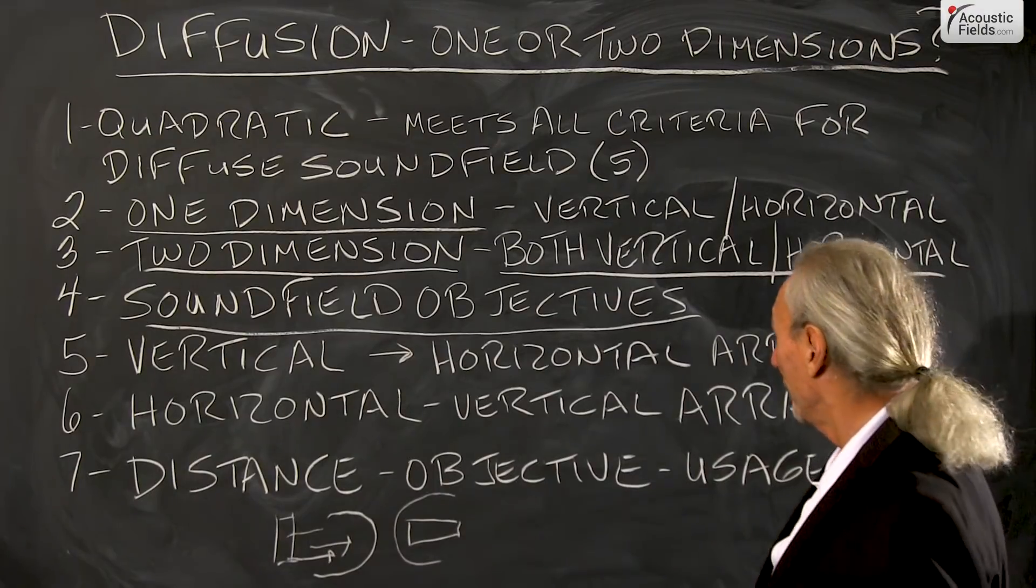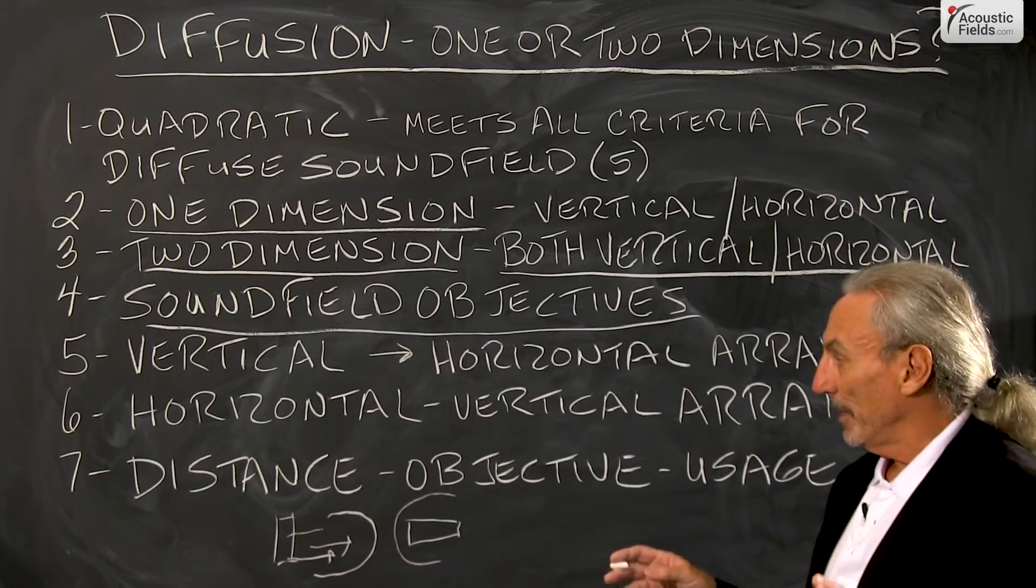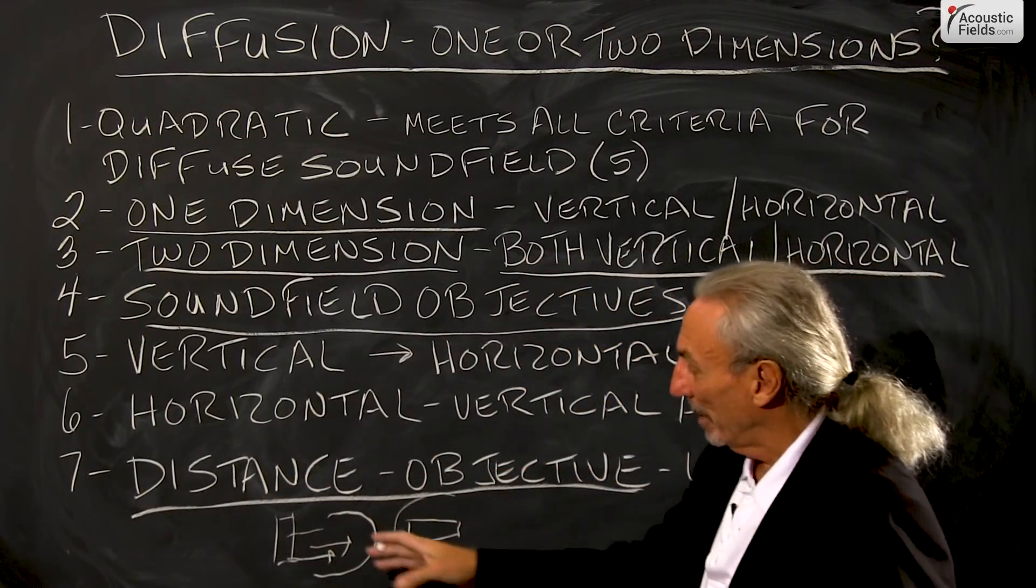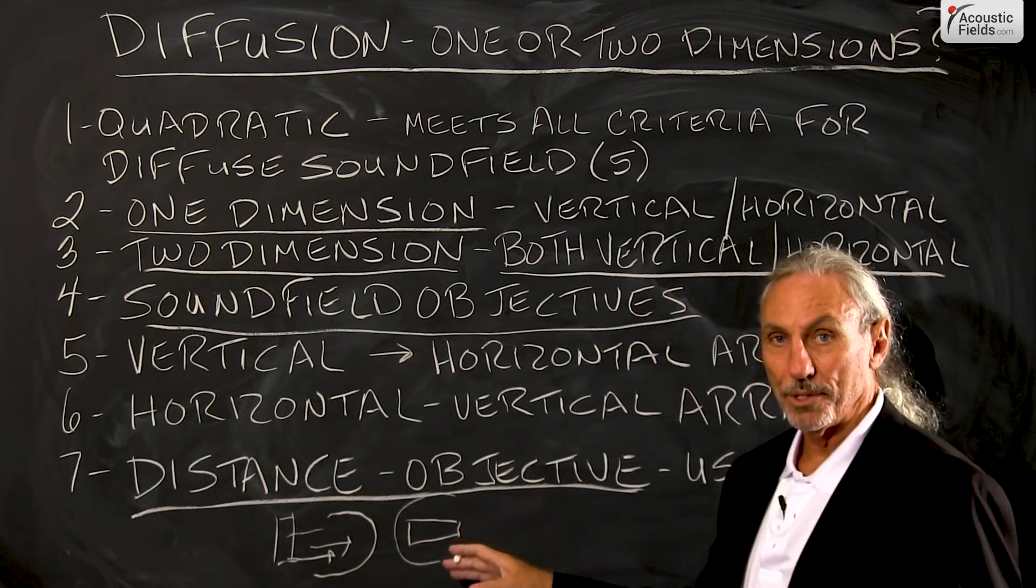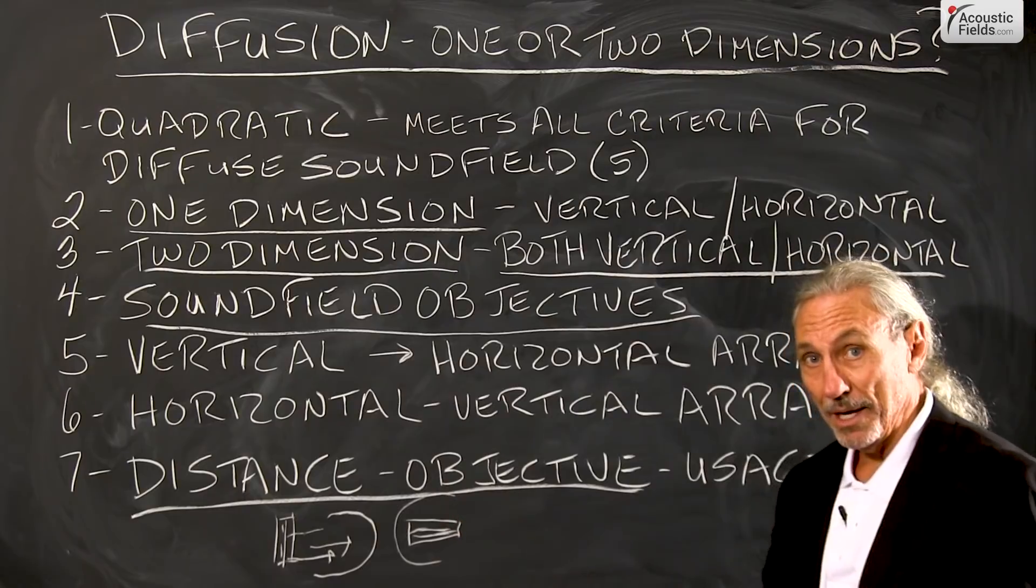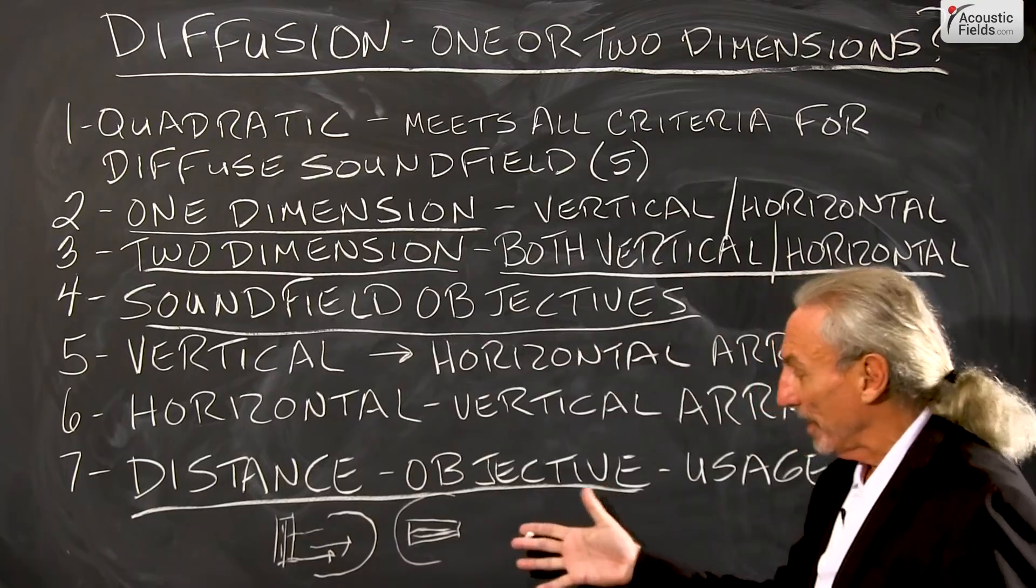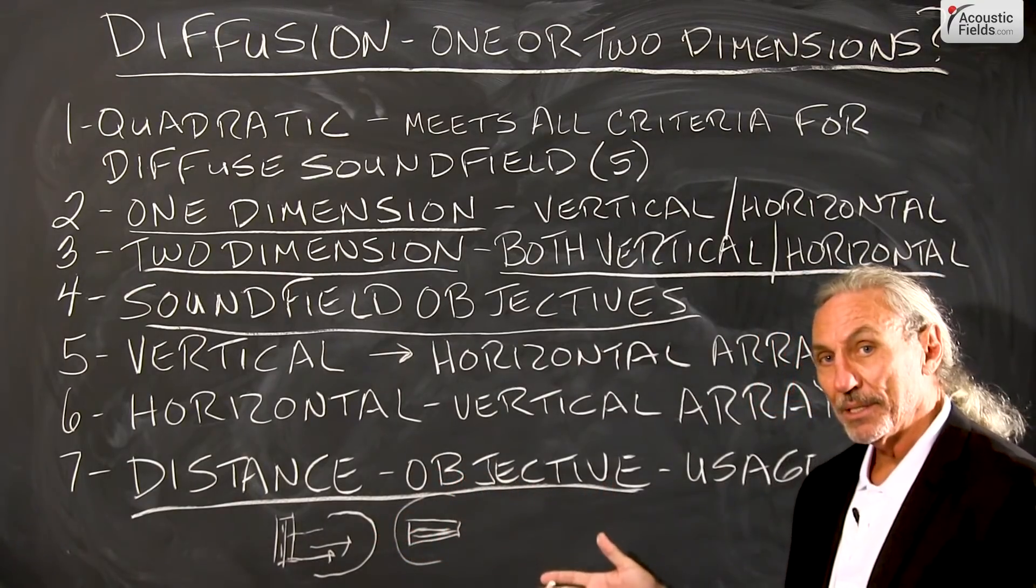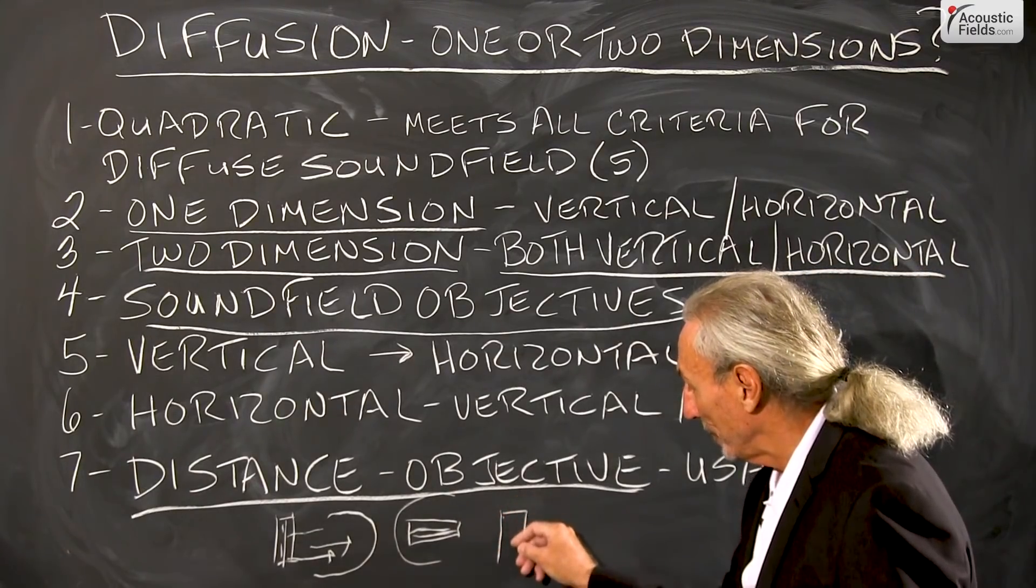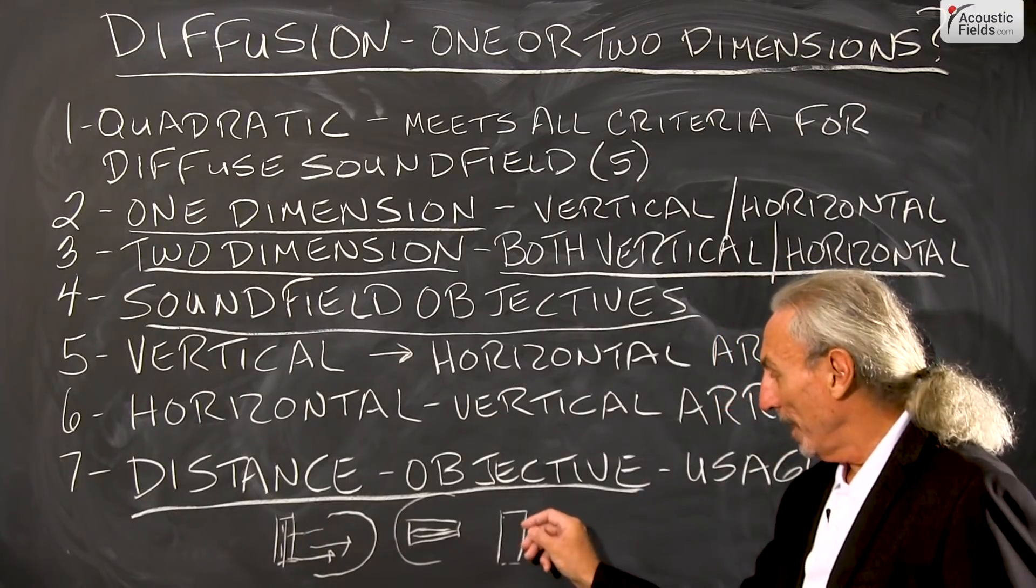So here's the thing about diffusion, it's so distance dependent. No matter what you're doing, a vertical or a horizontal distribution, no matter what you're doing with the diffuser, distance is the key. Why? Because the energy that goes into the diffuser and then comes out must have the appropriate distance to fully form and mature. So depending on the diffuser sequence and the depth of the diffuser, we have certain distance requirements.